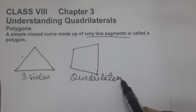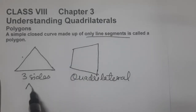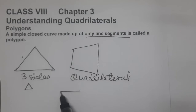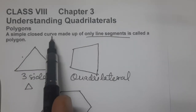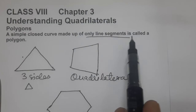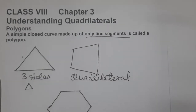In this chapter we are going to understand the full family of quadrilaterals. We also have triangle, hexagon, and other polygons studied in previous classes. A hexagon is a six-sided figure. So, a simple closed curve made up of only line segments is called a polygon.